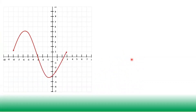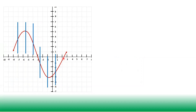Next, given a curve, we draw vertical lines across it. Checking each position: each vertical line crosses the curve at only one point. Wherever we place the vertical line, it intersects the curve at just a single point. So this is still a function.